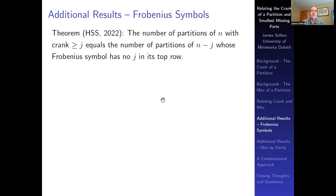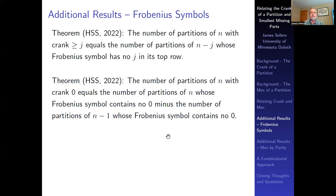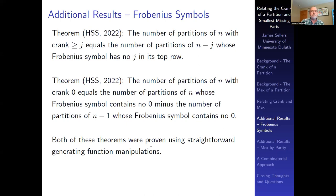In our paper with Brian Hopkins and Dennis Stanton in the JCTA, we extended Andrews's theorem in two ways. First, the number of partitions of n with crank ≥ j equals the number of partitions of n minus j whose Frobenius symbol has no j in its top row — with j=0 recovering Andrews's 2011 result. Second, the number of partitions of n with crank equal to zero equals the count whose Frobenius symbol contains no zero in either row, minus those for n minus 1.